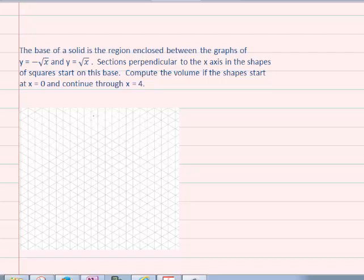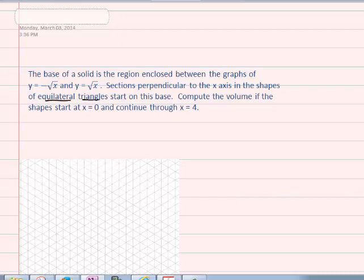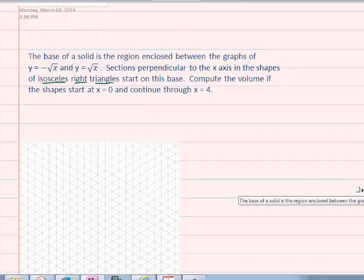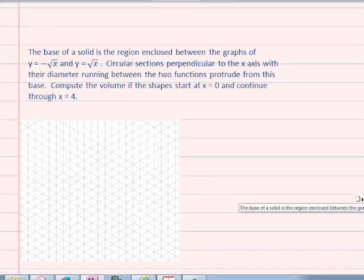And so we're going to begin, let's just talk about the different variations that we're going to see today. I'm going to race through these, but the first solid is one where squares are going to be the section running through the object. The next shape will be where we have equilateral triangles running through the shape. Then we'll go to isosceles right, and then we'll go to circles.